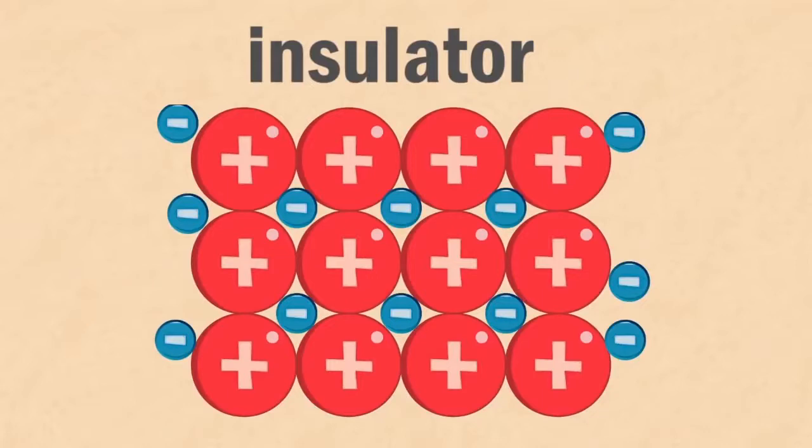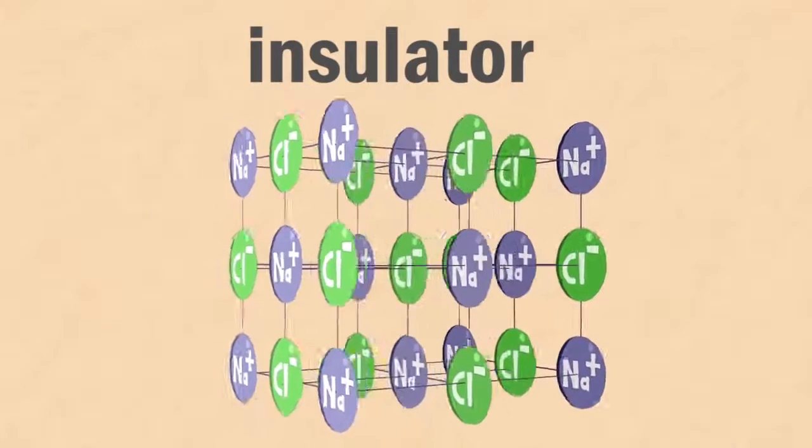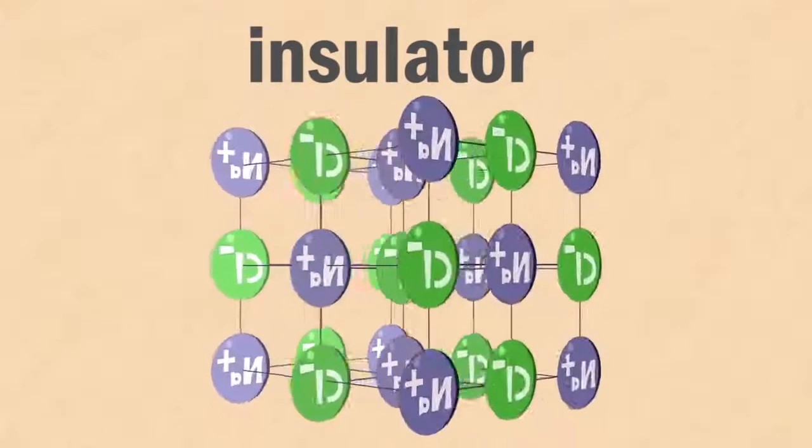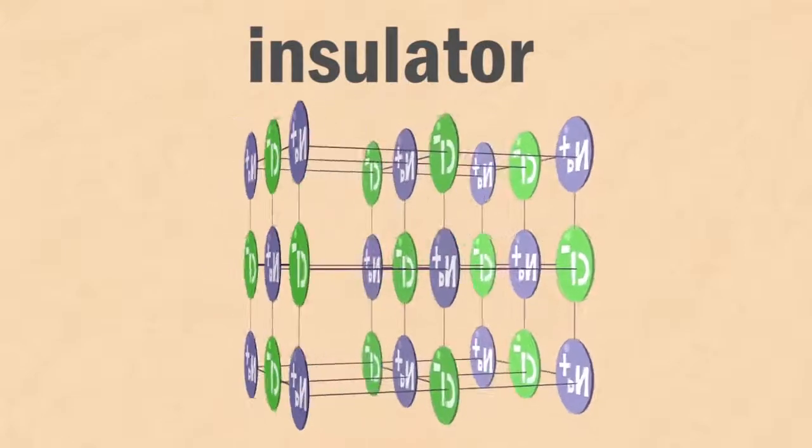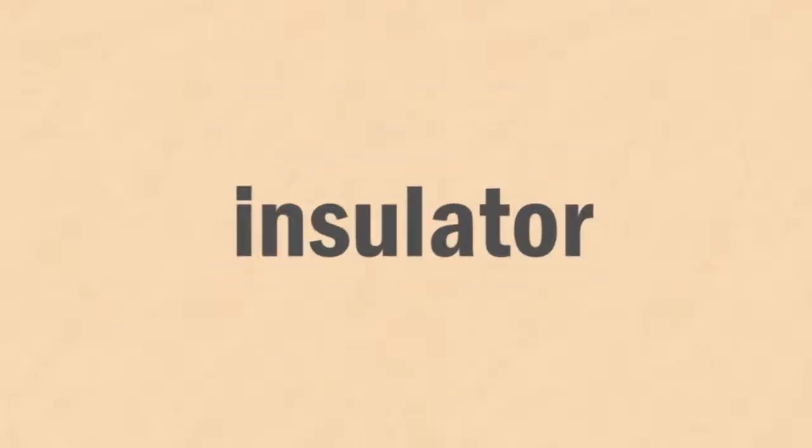In an insulator, the electrons may be more tightly bound to the atom or held in a bond or bonds. This makes them less mobile and so the electrons are not as free to move. These materials act as insulators.